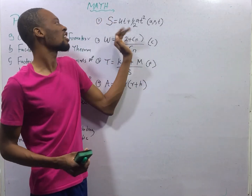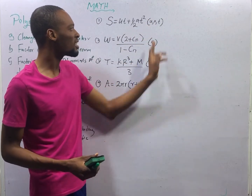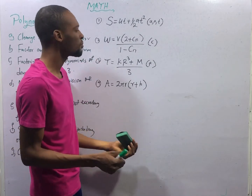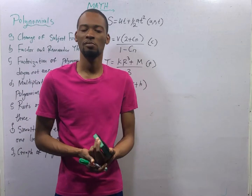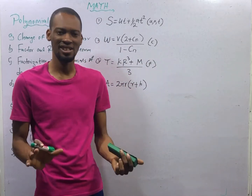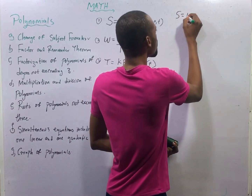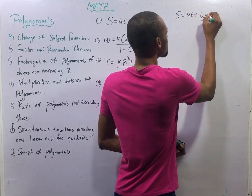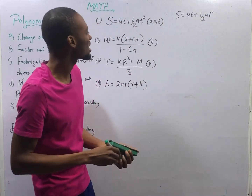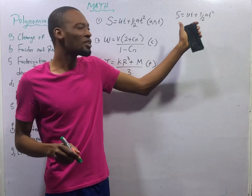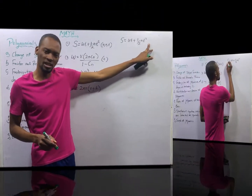Now in this first case, I will start by making U the subject formula. I will also make A the subject formula and make T the subject formula, so you see the various steps and techniques. For the first question, S equals UT plus one-half AT squared. If you are a physics student, you understand that this is one of Newton's equations of motion used to find distance.